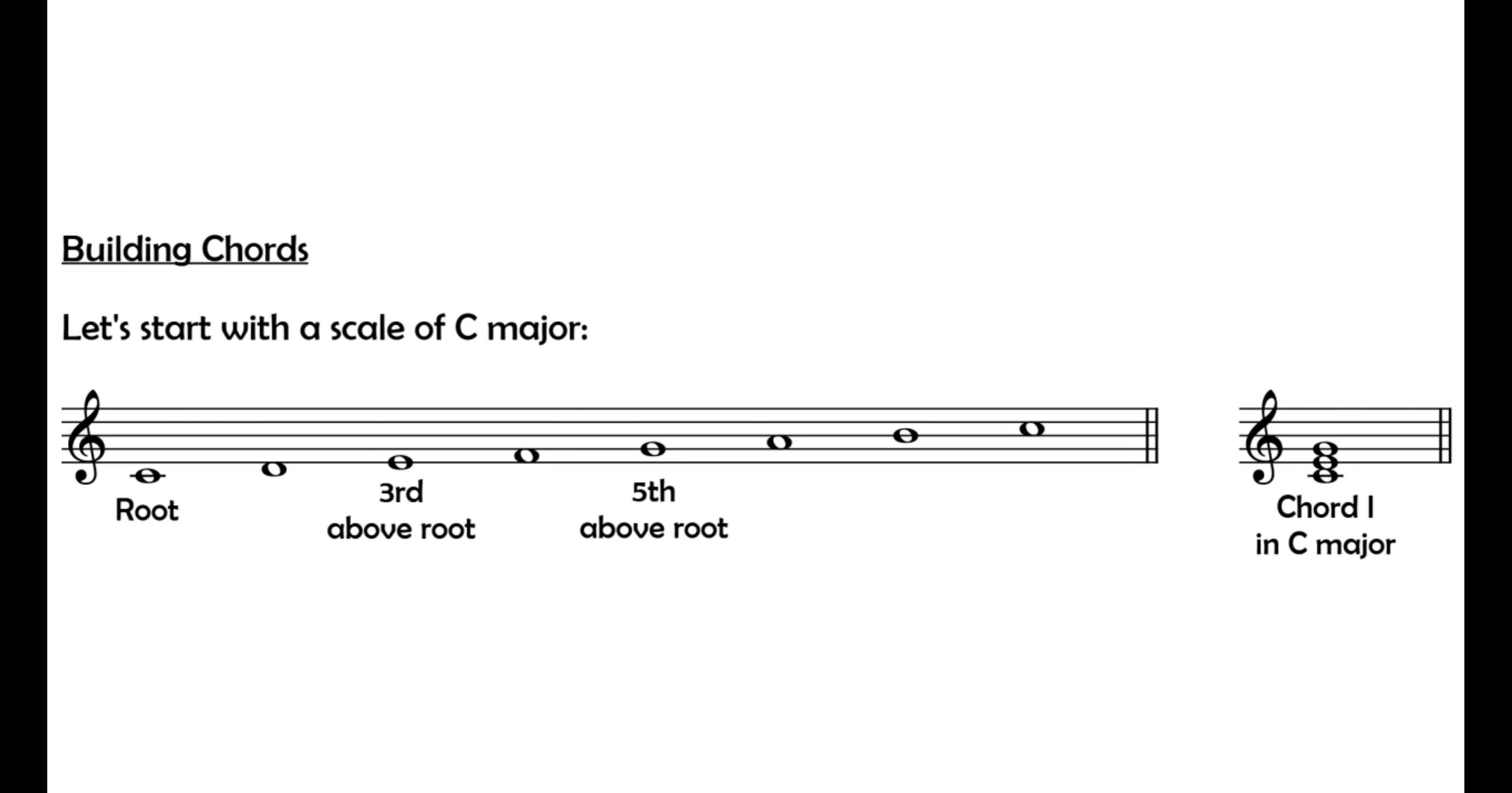To work out all of the chords in a key, we can draw a chord line. Start by writing one to five in a row using Roman numerals. These are the Roman numerals for 1, 2, 3, 4 and 5.